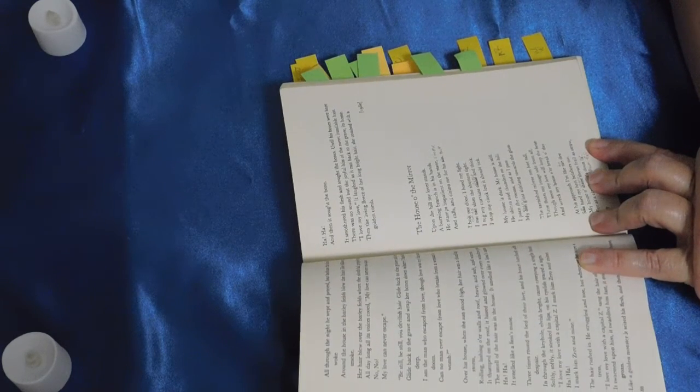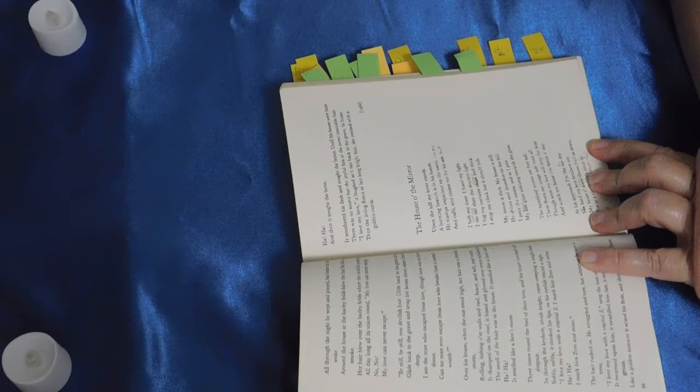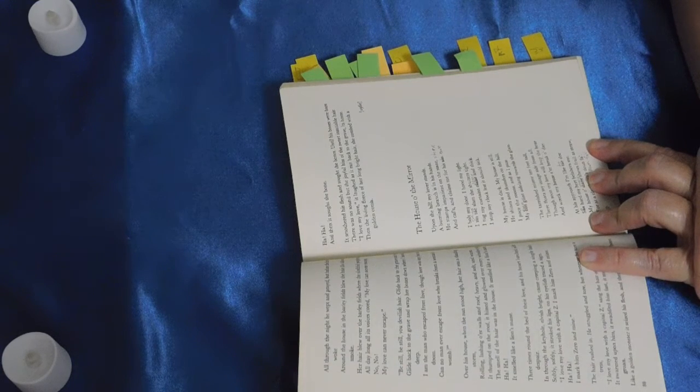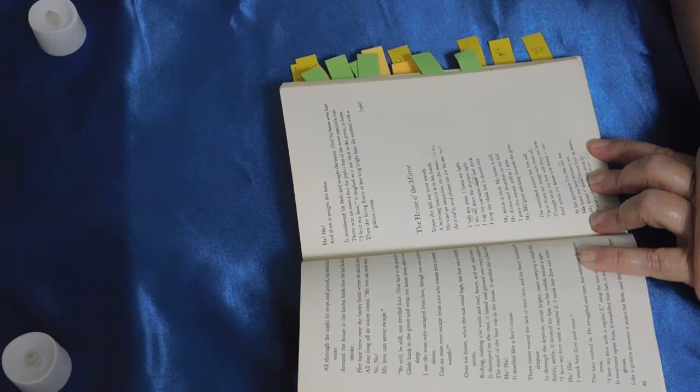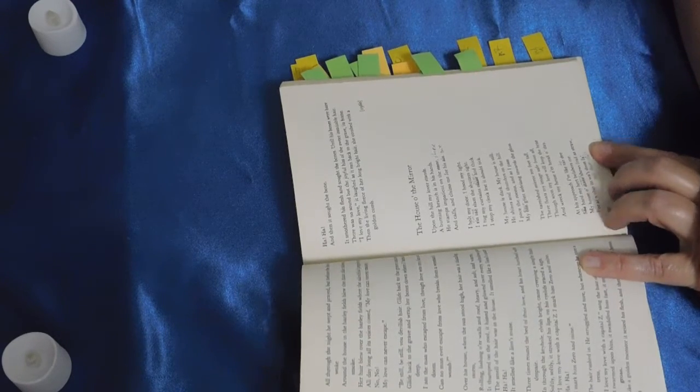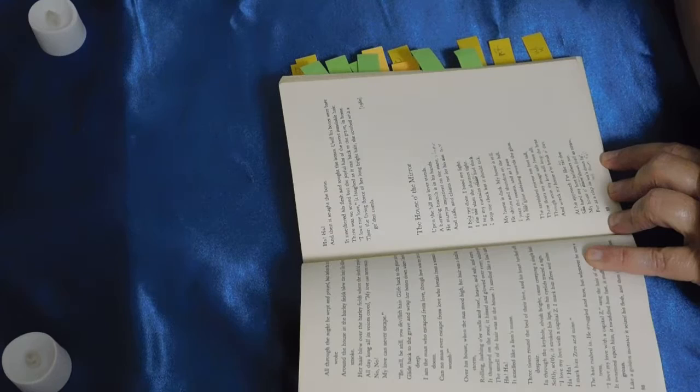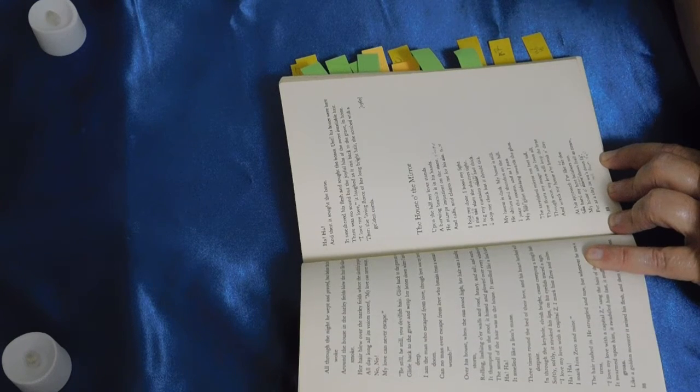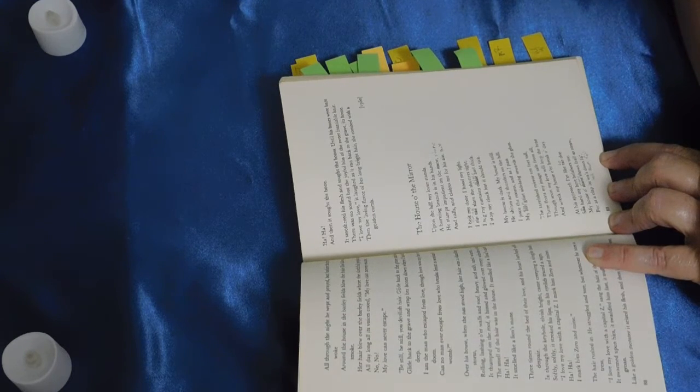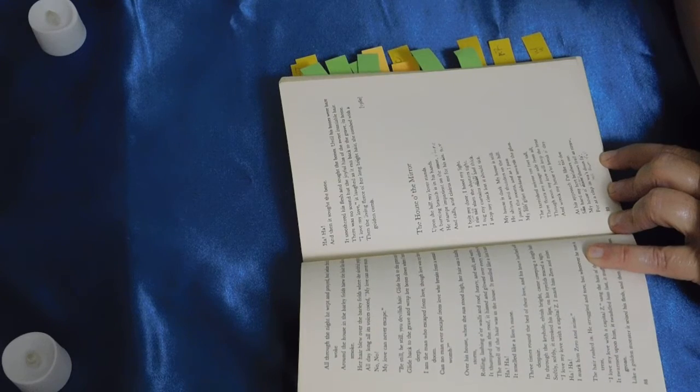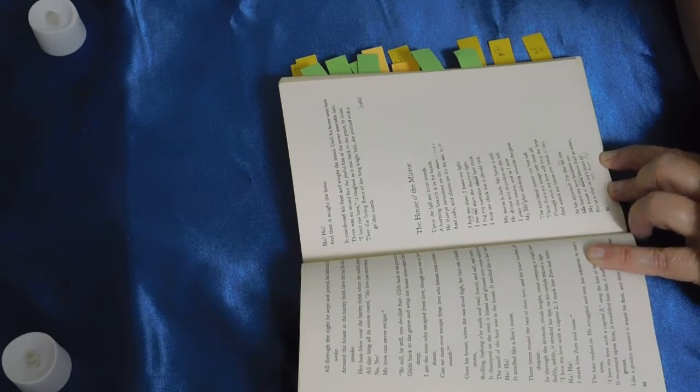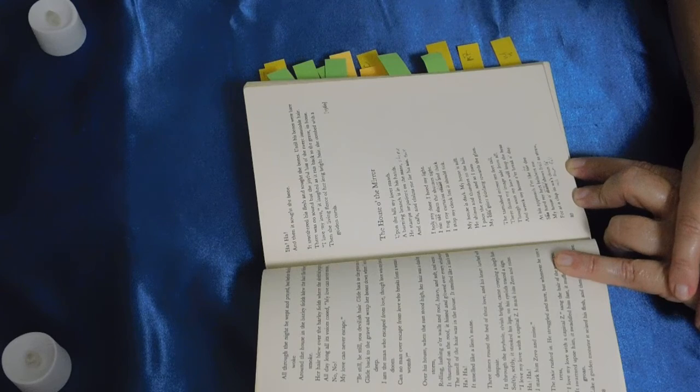Upon the hill my lover stands a burning branch is in his hands. He stamps impatient on the stone and calls and claims me for his own. I bolt my door I hood my light I run to slam the shutters tight I tug my curtains close and thick I stop my clock lest it should tick.